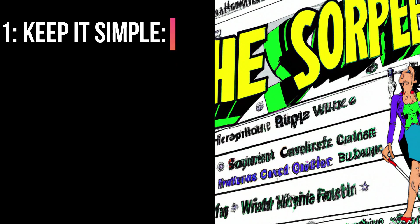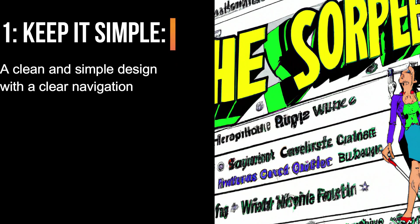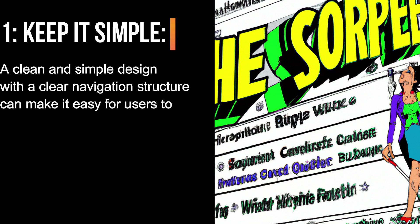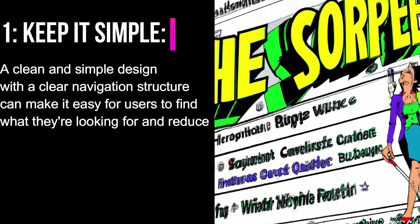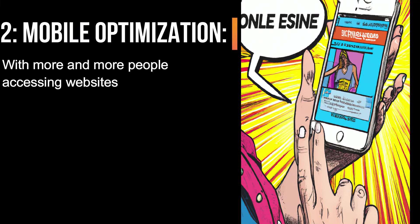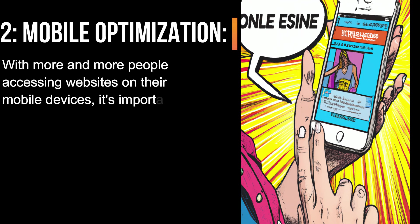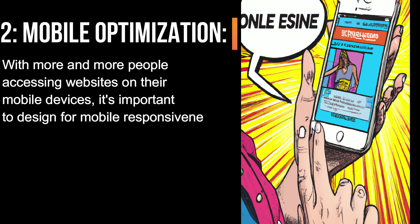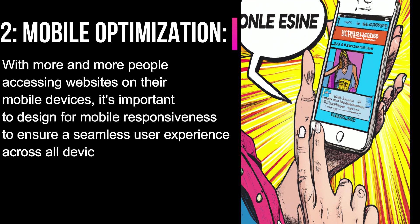1. Keep it simple. A clean and simple design with a clear navigation structure can make it easy for users to find what they're looking for and reduce confusion. 2. Mobile Optimization. With more and more people accessing websites on their mobile devices, it's important to design for mobile responsiveness to ensure a seamless user experience across all devices.